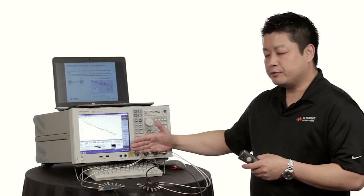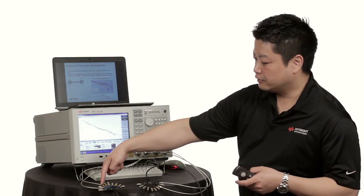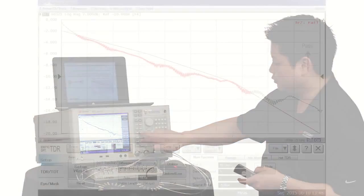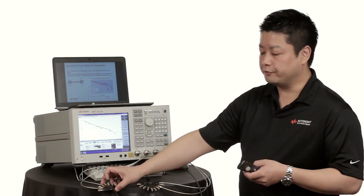The calibration reference plane is at the front of the test equipment and by calibrating to the end of the test fixtures we can improve the measurement by removing the effects of the test cables. It improved the insertion loss a little bit but the loss of the fixtures are still included in the measurement.